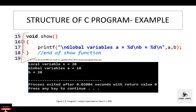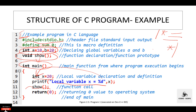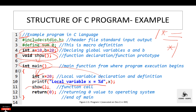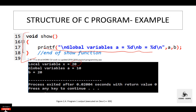The actual code is written inside the function definition. Inside the definition of the show function, the printf function displays the values of global variables A and B. After execution of this code, first the value of X is printed to the screen — X is 20. After that, when the show function is called, control transfers to the definition of show, and printf displays the values of A and B — value of A is 10 and value of B is 20.